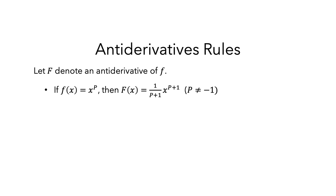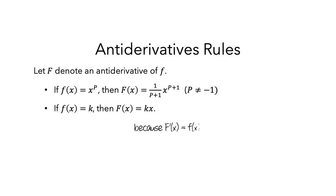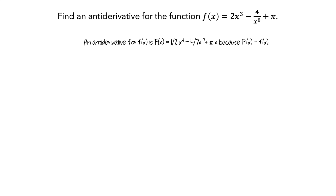An antiderivative of pi can be done using the power rule with p equals 0, but often finding the antiderivative of pi is viewed as a special case where a function is equal to a constant. In this case, an antiderivative of the constant function is the constant times x. Now, both of these rules work because if you differentiate capital F you get little f. But these rules are not entirely precise. To see why, let's go back to our original task. We found an antiderivative of little f — can we find another function whose derivative is little f?